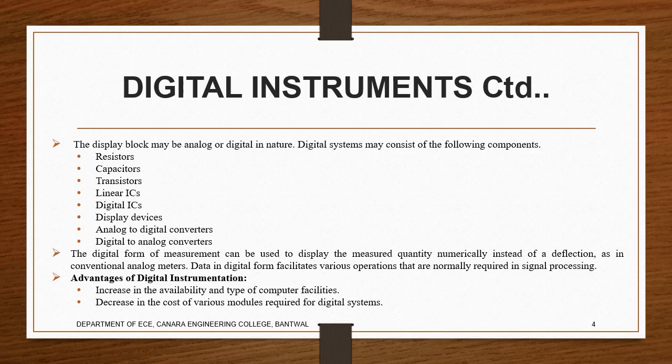The display block may be analog or digital in nature and may consist of the following components: resistors, capacitors, transistors, linear ICs, digital ICs, display devices, analog to digital converters, and digital to analog converters, which we say as ADC and DAC. We'll be using these things regularly.